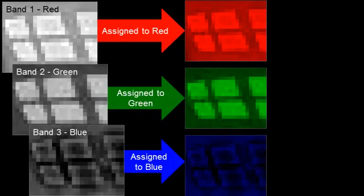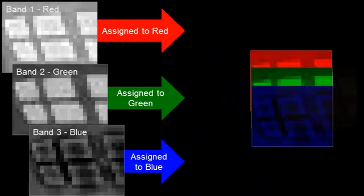Just like our eyes sense reflectance and our brains transform it into an image that makes sense to us, a camera senses reflectance and a computer actually transforms that into an image that makes sense to us. It does it by assigning colors to the reflectance within each one of the bands — red is given to red, green to green, and blue to blue. Once that color is assigned to the reflectance value, those three colors are then blended together to form the image that we actually see.